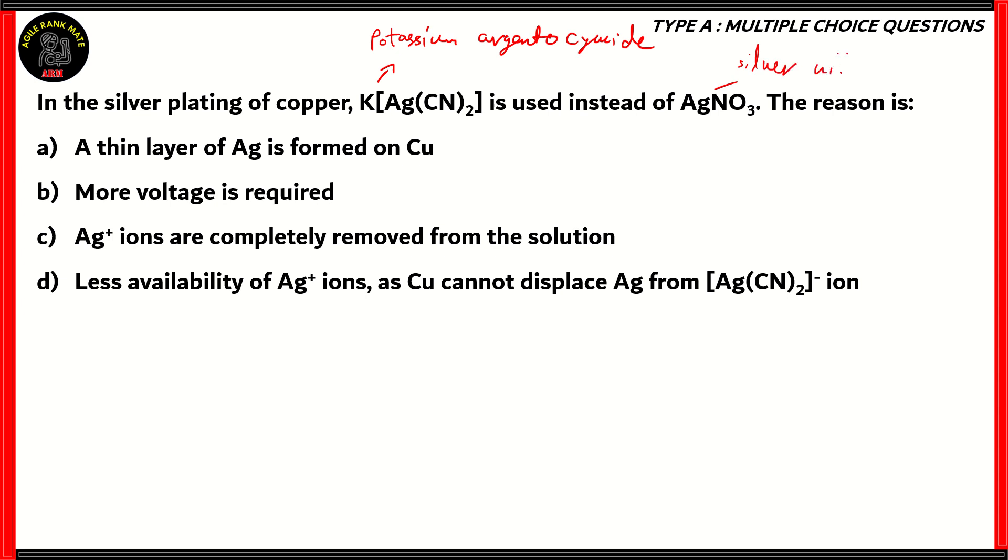Now the compounds here, K[Ag(CN)2] is potassium argento cyanide and AgNO3 is silver nitrate. Silver plating uses electrolysis in order to plate a copper instrument or utensil with silver.